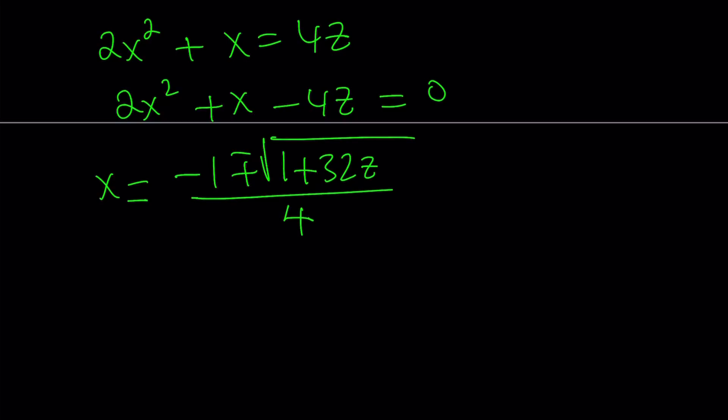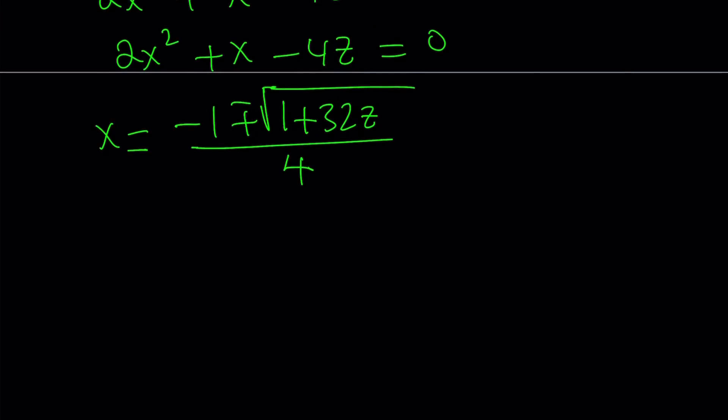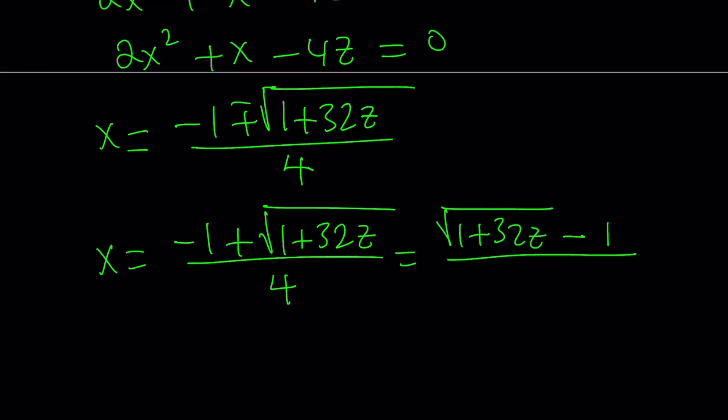There's a plus minus which means there are two solutions. Which one am I going to use? I'm going to use one of them, but if you use the other one, I think it'll give you the same thing. You can test it out. So suppose x equals the square root of 1 plus 32z minus 1 over 4. I can write it a little nicer by putting the radical first because I want to write it as a difference and not as a sum. So x can be written like this.